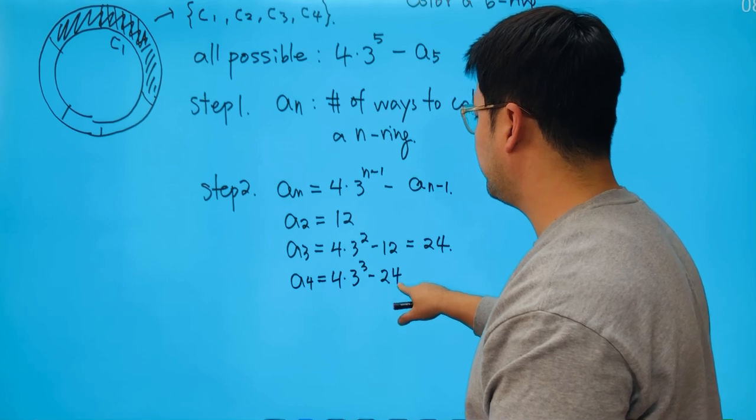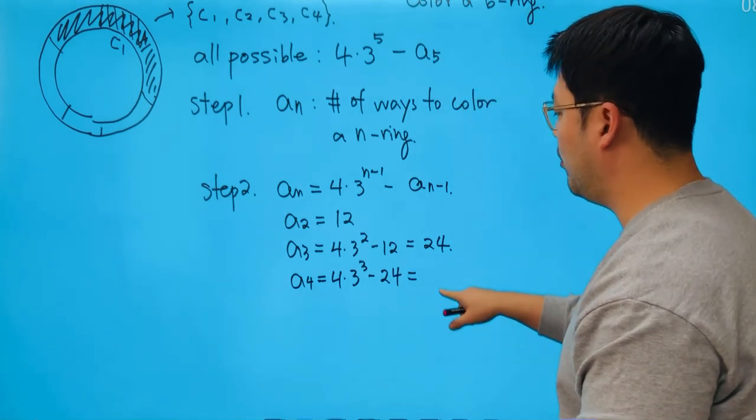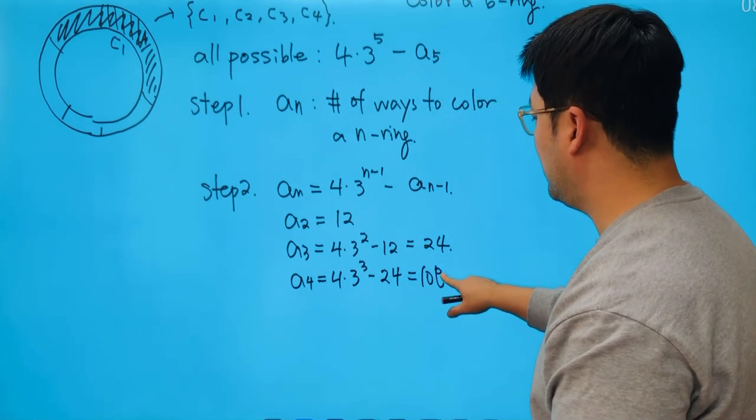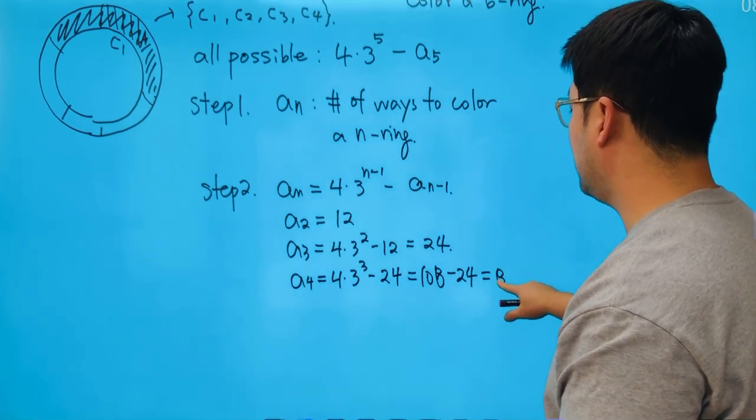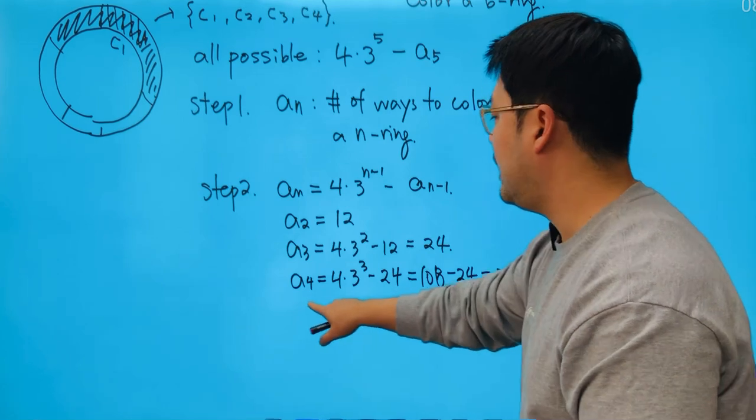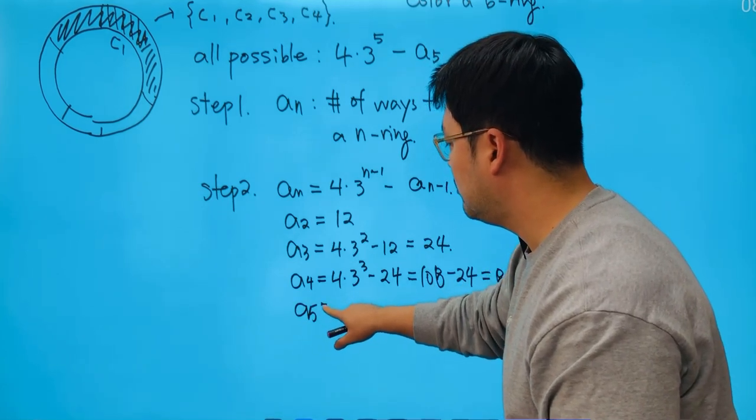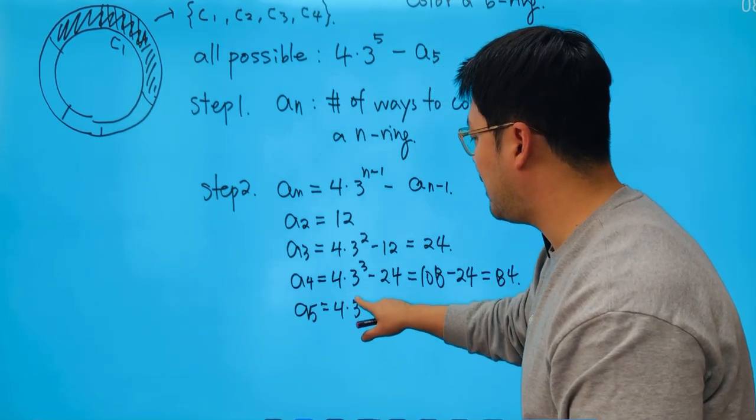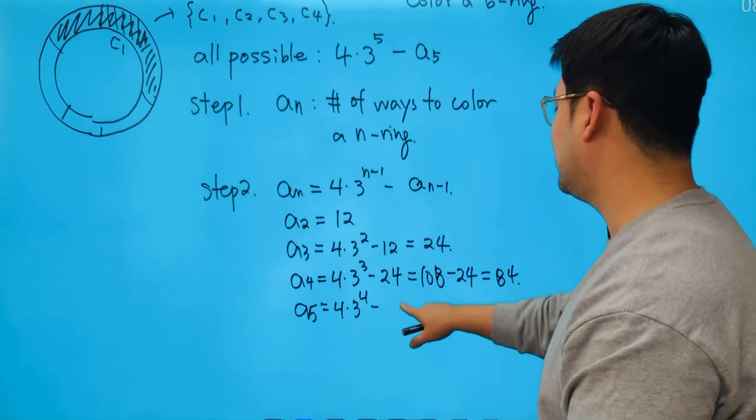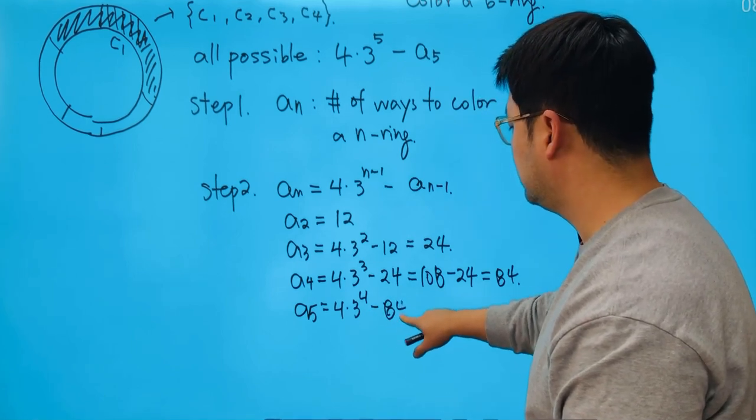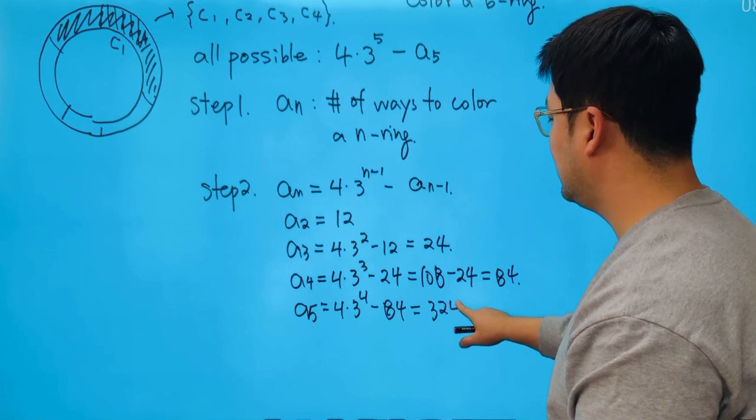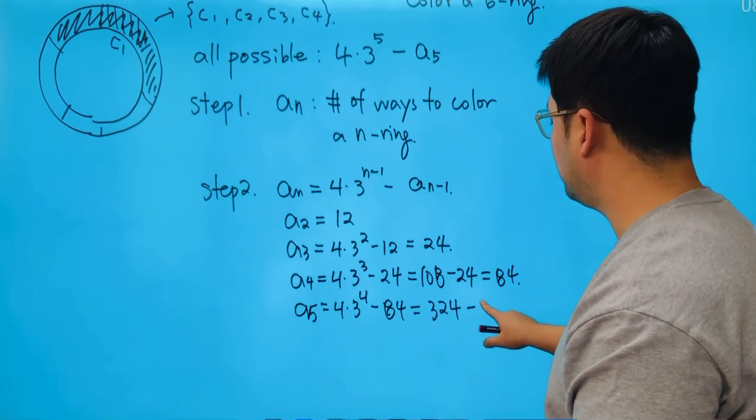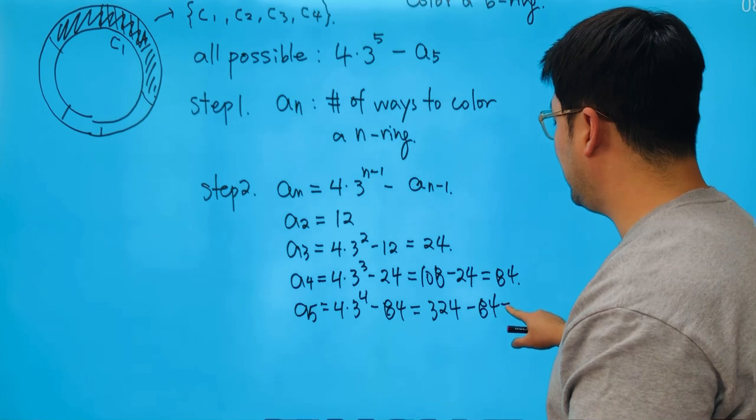minus 24. And we have 108 minus 24, which is going to be 84. And A_5 will be 4 times 3 to the power of 4 minus 84. So what's 4 times 81? So 324. And that becomes minus 84, so we get 240.